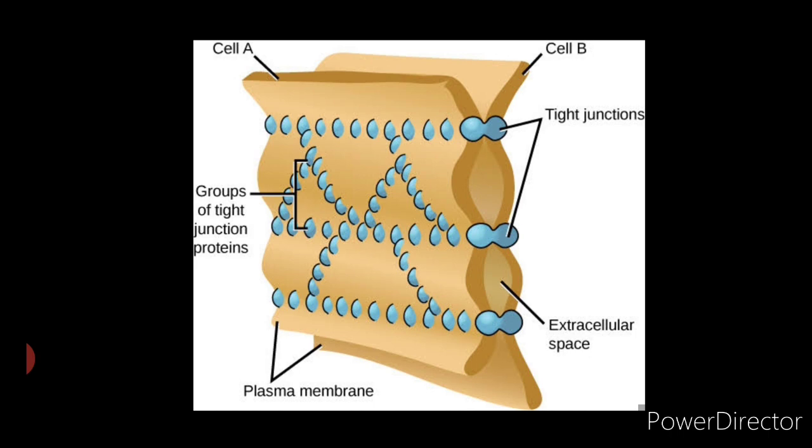They result from mutual binding of strands of specific membrane proteins which form a series of joints encircling each epithelial cell. They are found in regions surrounding the lumen of organs such as the intestine, collecting tubules of the kidney, and urinary bladder cells.